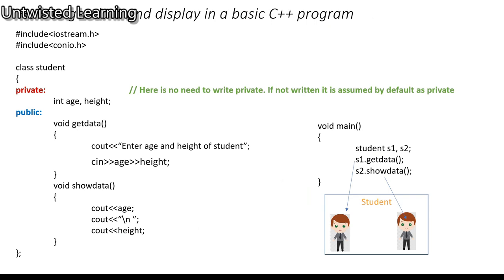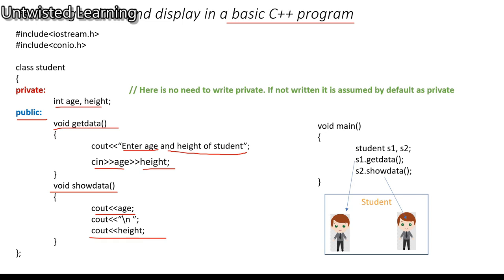Now, how to get data and display in a basic C++ class program. I have created two variables inside the private section: integer age and height. Then inside public, I have created two functions — one to get data, which uses cout to prompt 'enter age and height of the student' and cin for age and height, and another function show data to display age and height.